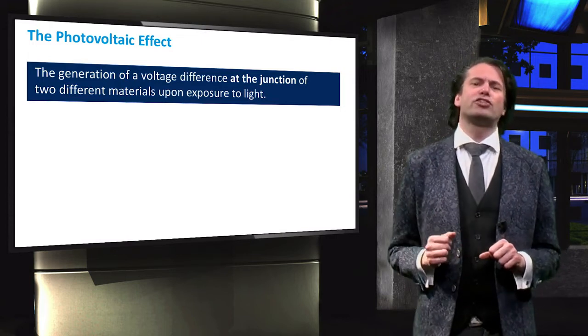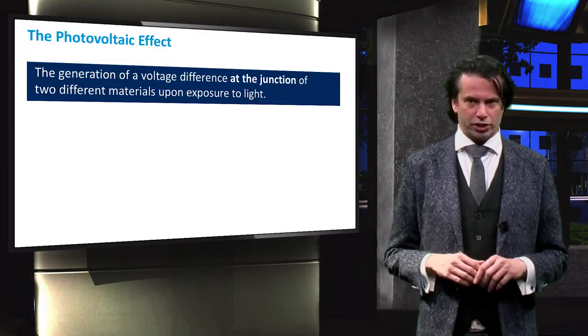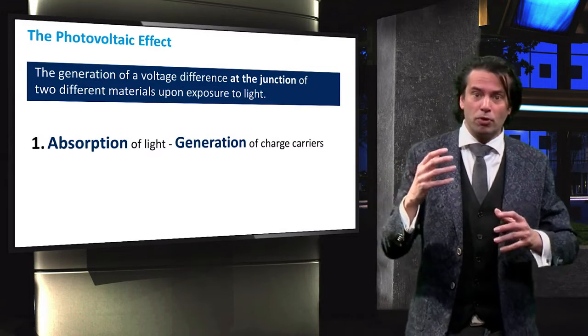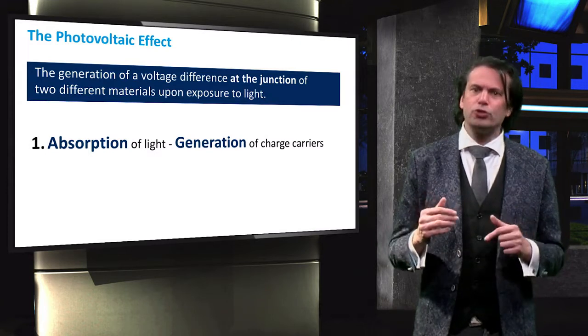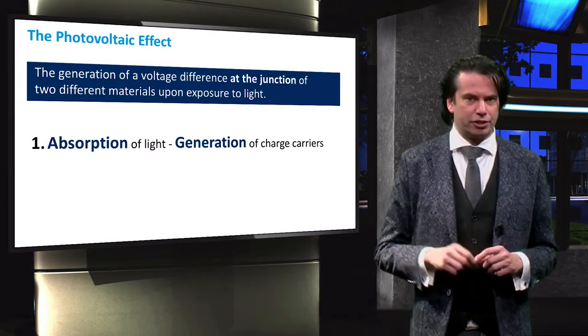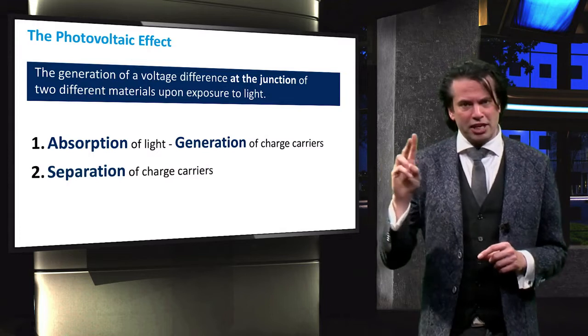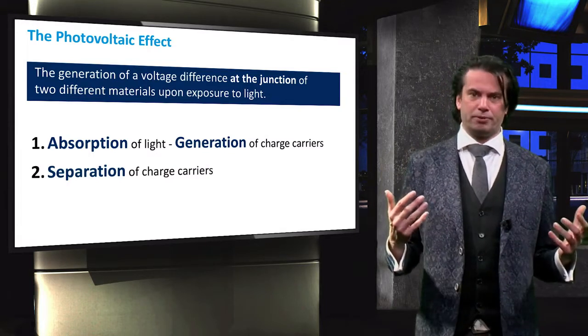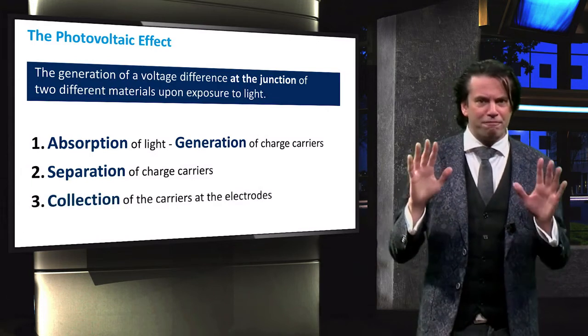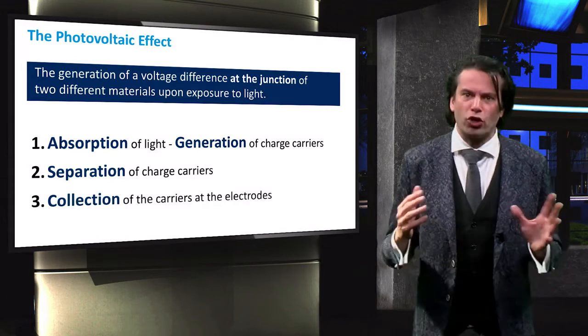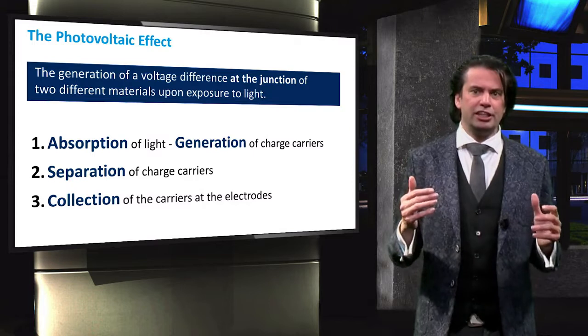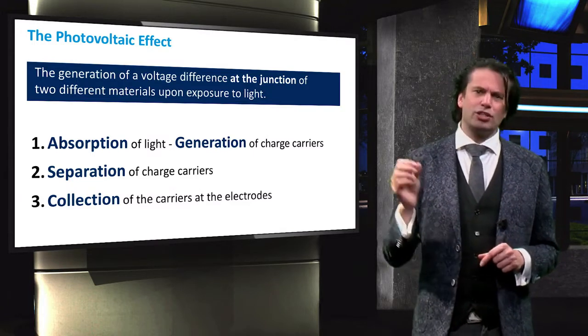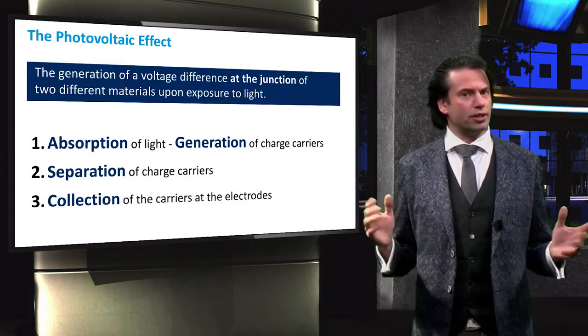The photovoltaic effect consists of three distinct processes. The first process involves the absorption of light, which leads to the generation of charge carriers. During the second process the generated charge carriers are separated. The third and final process consists of the collection of the charge carriers at the electrodes. Let's look at these processes in some more detail.